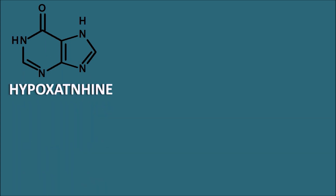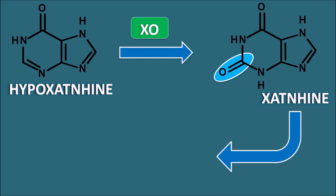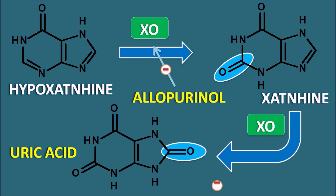One of the important purines is hypoxanthine. Hypoxanthine is converted into the metabolite xanthine by an oxidation process — an extra keto group is introduced — and the enzyme responsible is xanthine oxidase. Xanthine oxidase then converts xanthine into uric acid, the end product of purine metabolism in mammals, again by an oxidation reaction introducing another keto group, mediated by the same xanthine oxidase enzyme. In this way, xanthine oxidase converts hypoxanthine to uric acid in a two-step process. Allopurinol can inhibit xanthine oxidase activity at both of these steps, thereby controlling the formation of uric acid and reducing uric acid levels.